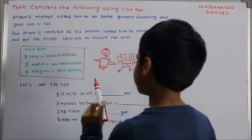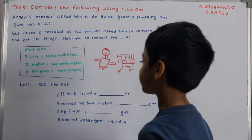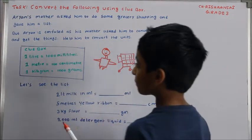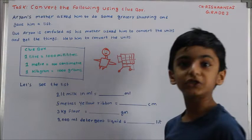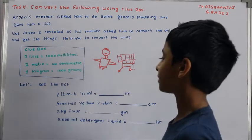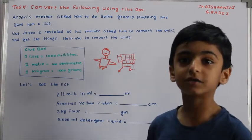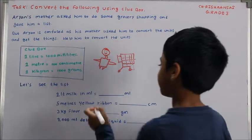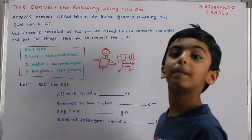2 litres milk in millilitres. The answer is 2000 millilitres. We have to write it on the blank.